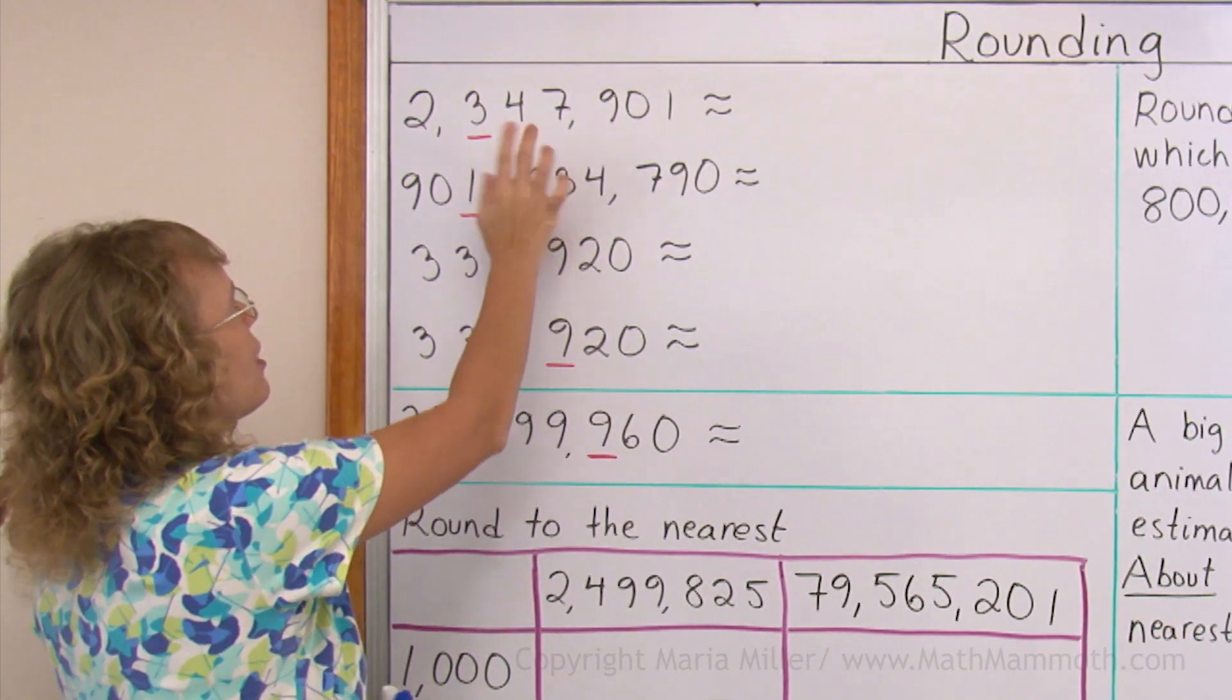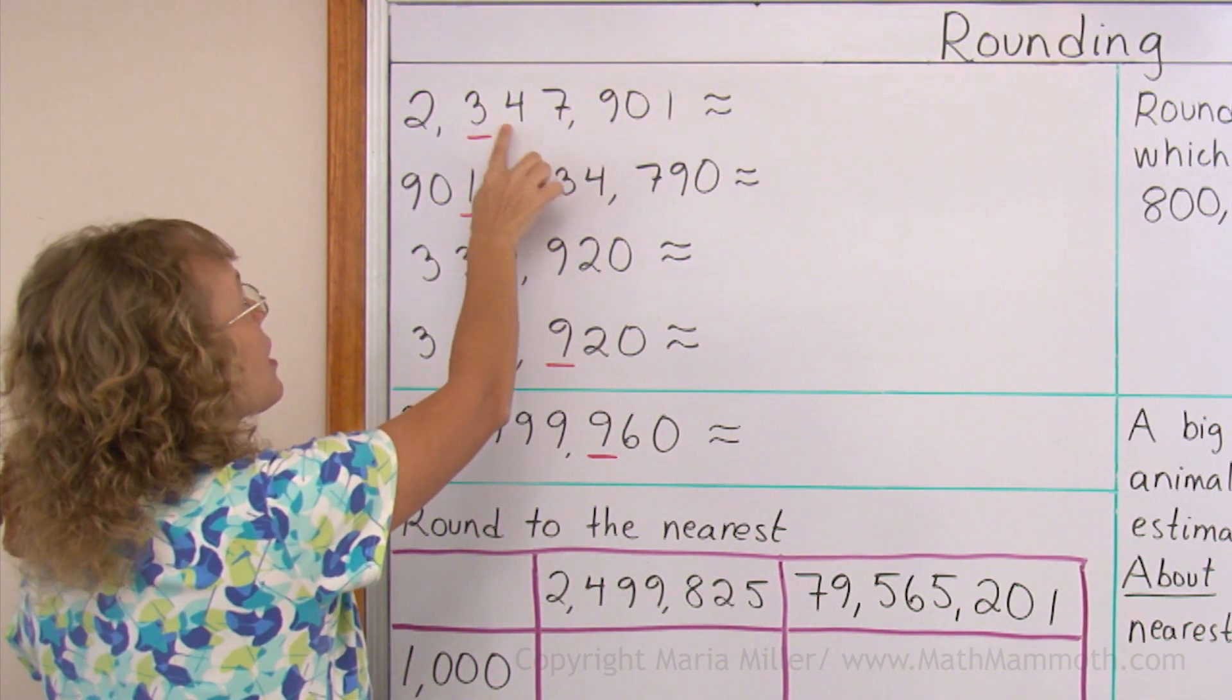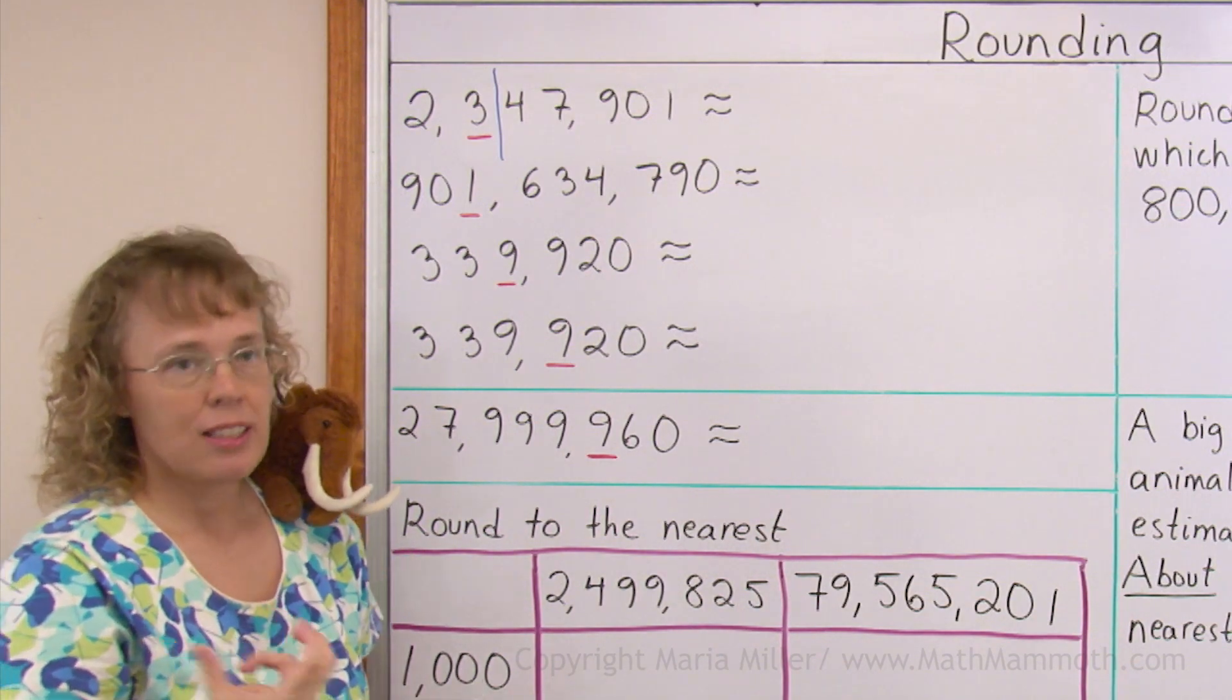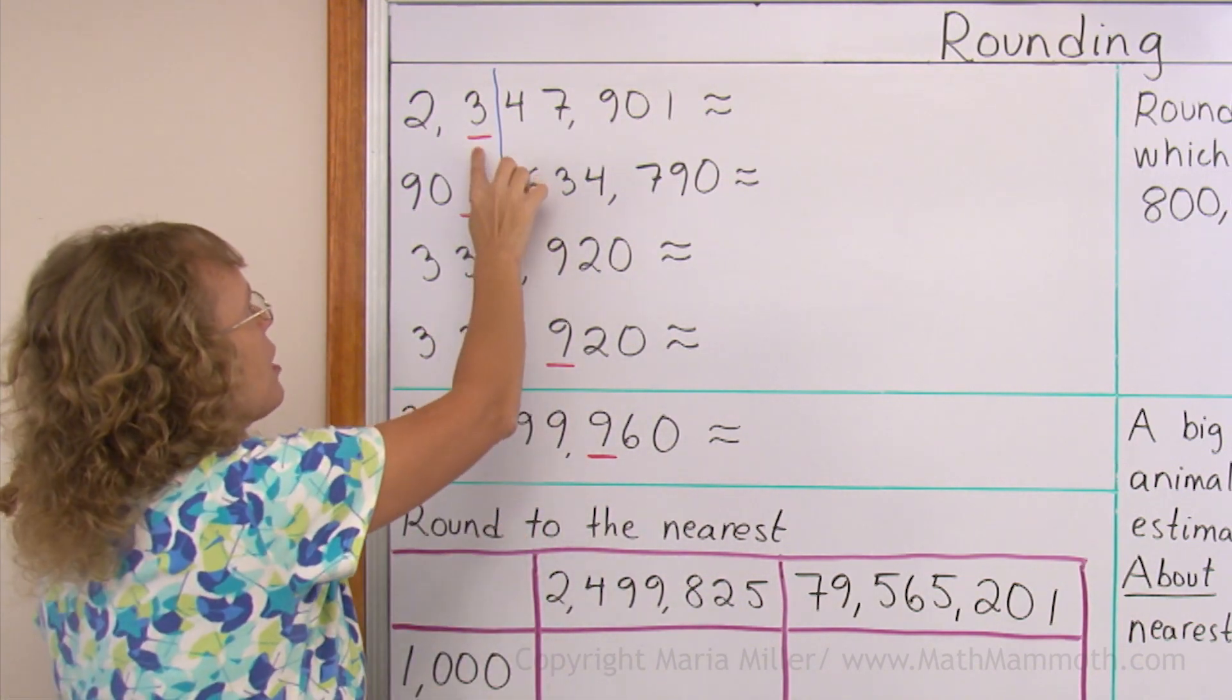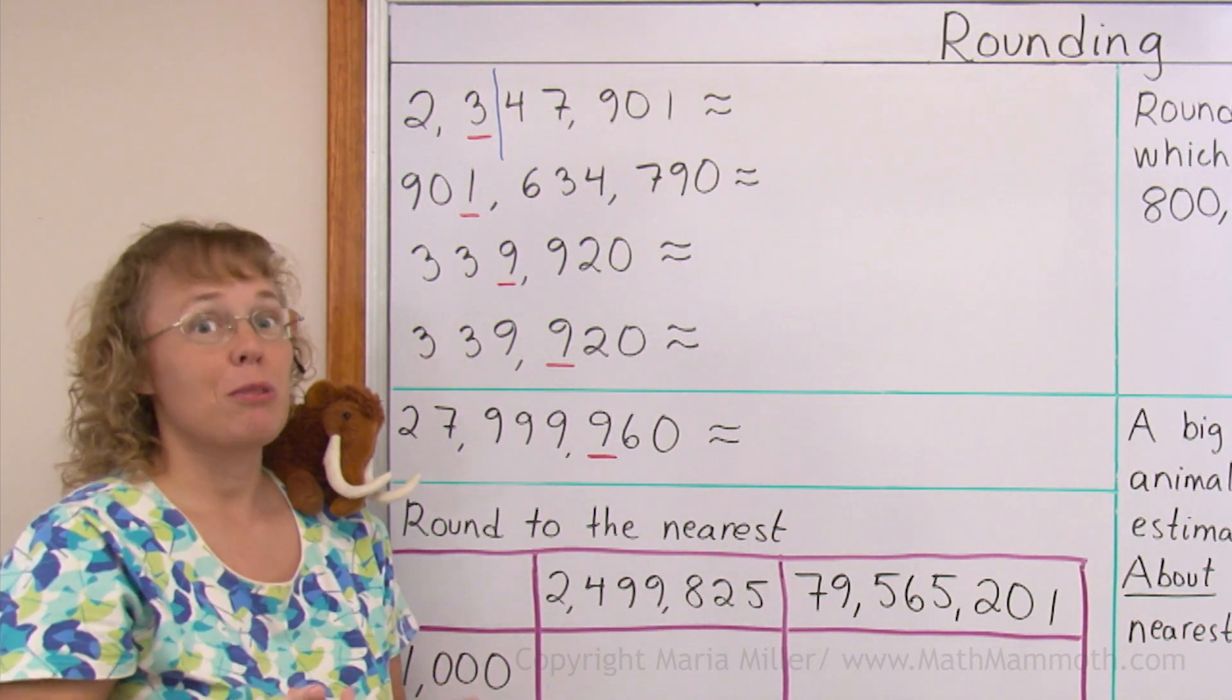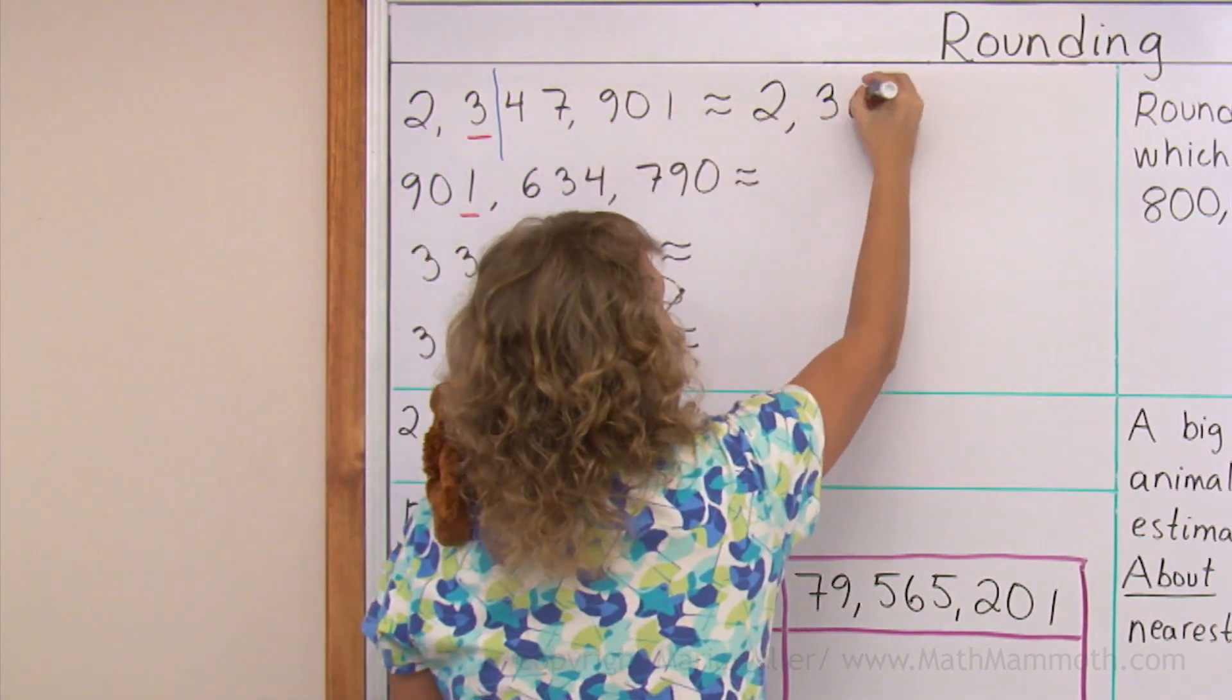We need to round this number to this place. The underlined digit shows the place we are rounding to. And what place is it? Here would be thousands place, ten thousands and then hundred thousands place. The way I like to do rounding is I draw a line right after that place we are rounding to. That's my cutoff line and all these digits will become zeros. But we need to look at the digit right after this place, this digit 4. It tells us whether we are rounding up or down. And it is 4, so we round down. If that digit is zero, one, two, three or four, we round down. And that means that this does not change and these become zeros. So we get two million, three hundred thousand.